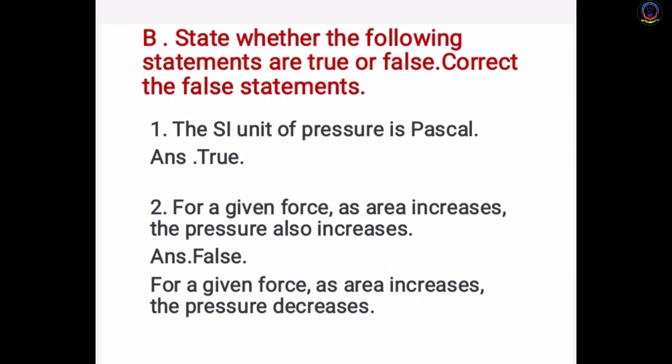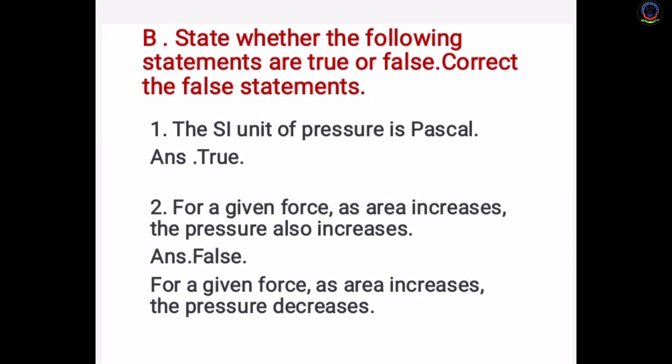Question B: State whether the following statements are true or false and correct the false ones. 1) The SI unit of pressure is Pascal — True. 2) For a given force, as area increases, pressure also increases — False; pressure decreases. 3) Fluids exert pressure on the walls of the container — True. 4) As we go high up in the mountains, pressure due to air decreases — True. 5) Atmospheric pressure is measured using a manometer — False; it is measured using a barometer.